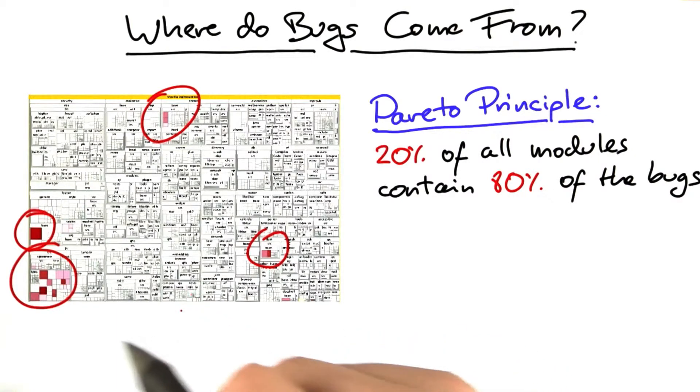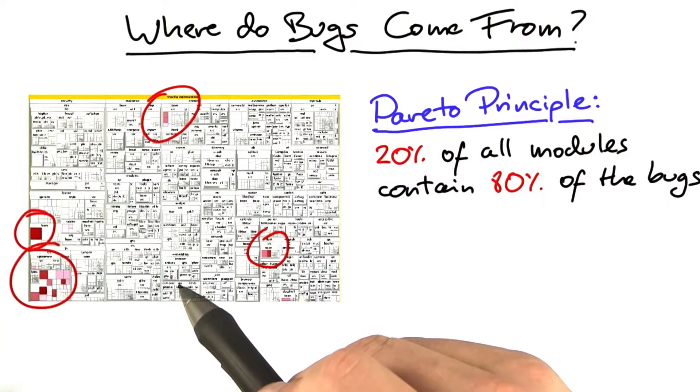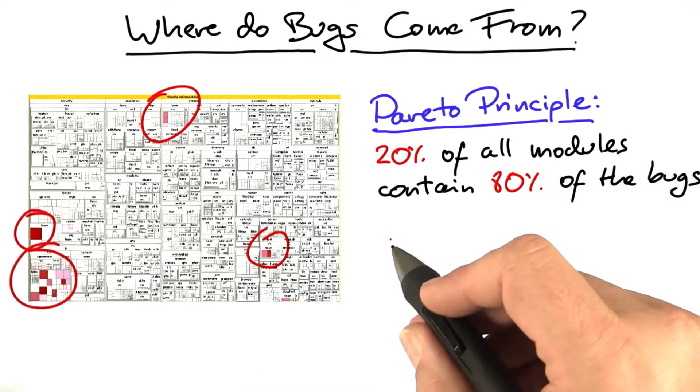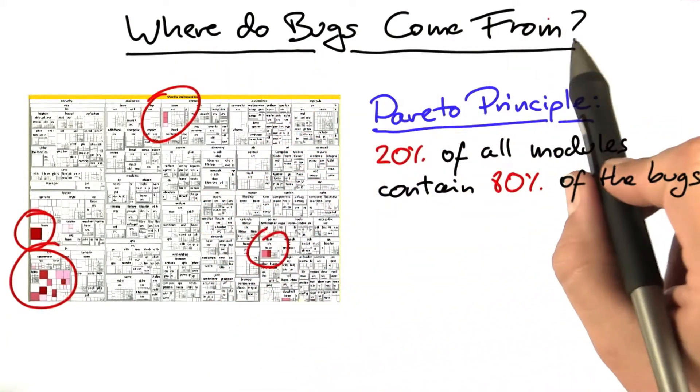Initially, we were just excited of being able to create such distributions more or less at the touch of a button. But as you look at these distributions, you begin to wonder, where do these bugs actually come from?